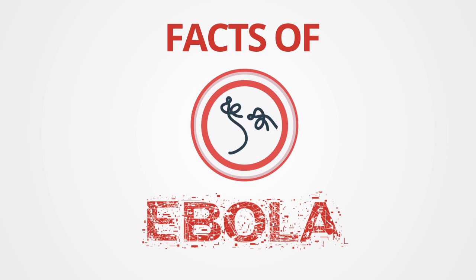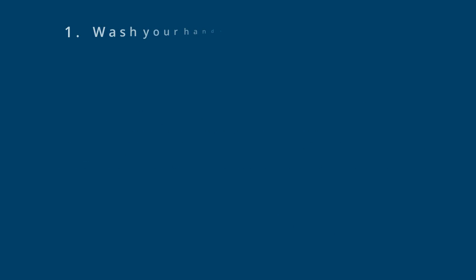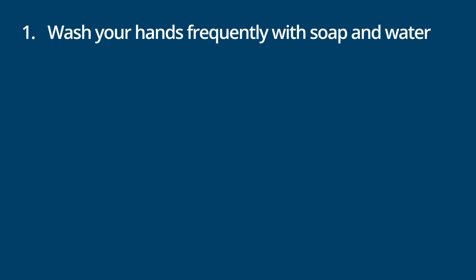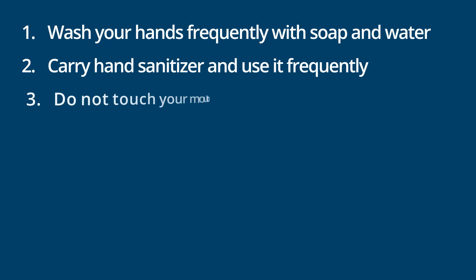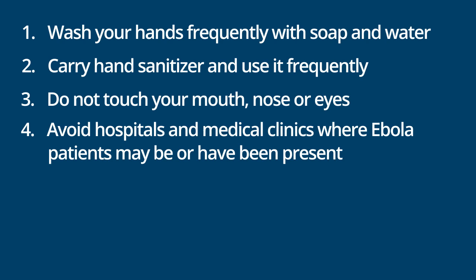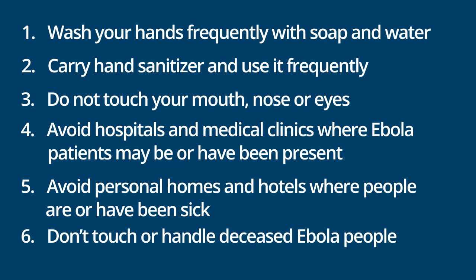Now that you understand the facts about the Ebola virus and how it is spread, use these simple yet effective steps to prevent infection. 1. Wash your hands frequently with soap and water. 2. Carry hand sanitizer and use it frequently. 3. Do not touch your mouth, nose, or eyes. 4. Avoid hospitals and medical clinics where Ebola patients may be or have been present. 5. Avoid personal homes and hotels where people are or have been sick. 6. Don't touch or handle deceased Ebola people.